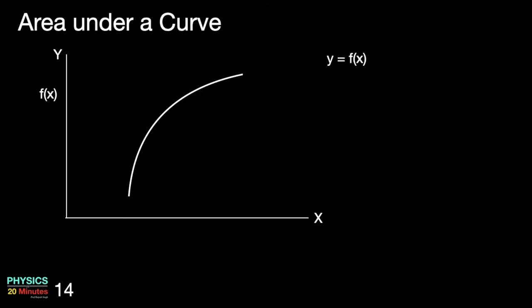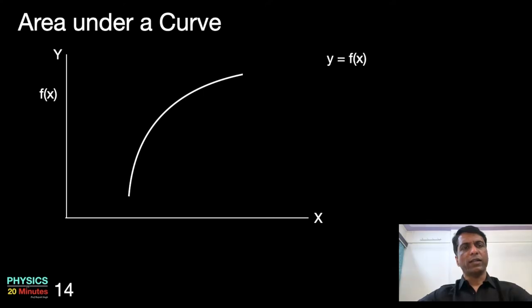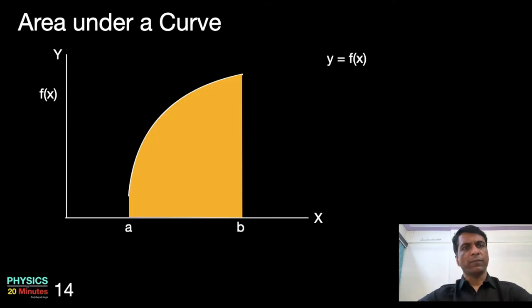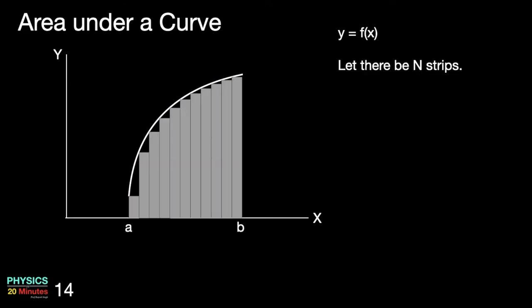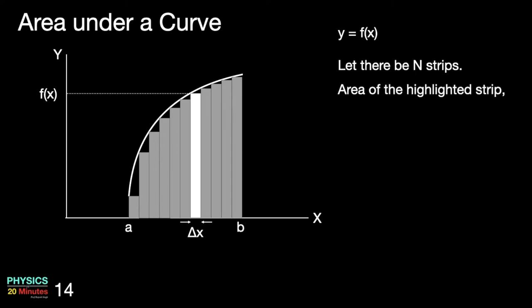But what happens if my function becomes a curve? How do I find the area beneath the curve and the x axis within the limits a and b — that is the shaded area? One of the ways to find the shaded area is to divide the area into a large number of strips, find the area of each strip and add them together. Let the area be divided into n number of vertical strips. We can take one such strip and find its area. Let its width be Δx and its height be given by the value of the function at that point, f(x). The area of the shaded strip will be ΔA = f(x) Δx.